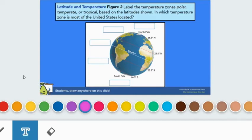Latitude and temperature, figure 2. Label the temperature zones polar, temperate, or tropical based on the latitudes shown. In which temperature zone is most of the United States located?